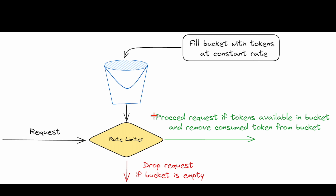If the request is received and there are enough tokens in the bucket, the request is allowed and tokens are consumed and removed from the bucket. If there are not enough tokens in the bucket, the request is dropped. This is how the token bucket rate limiter algorithm works.